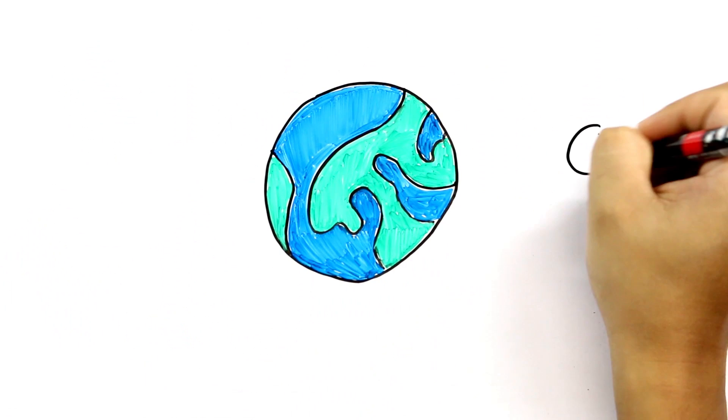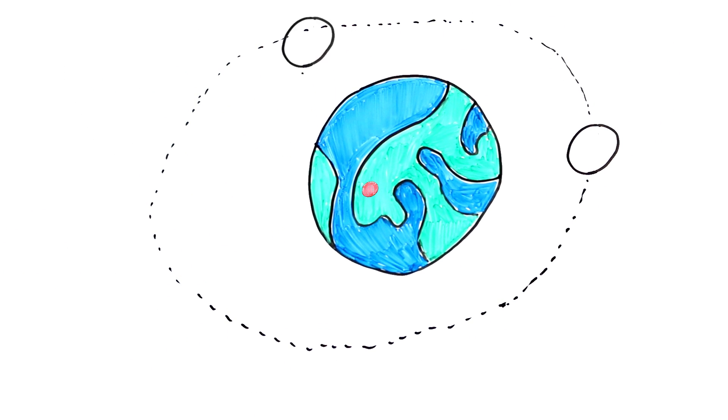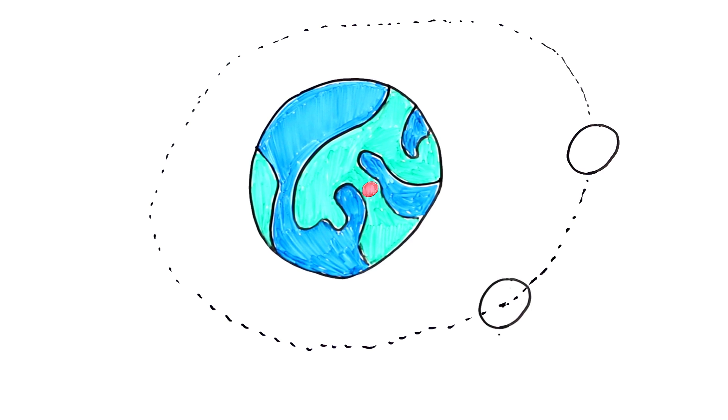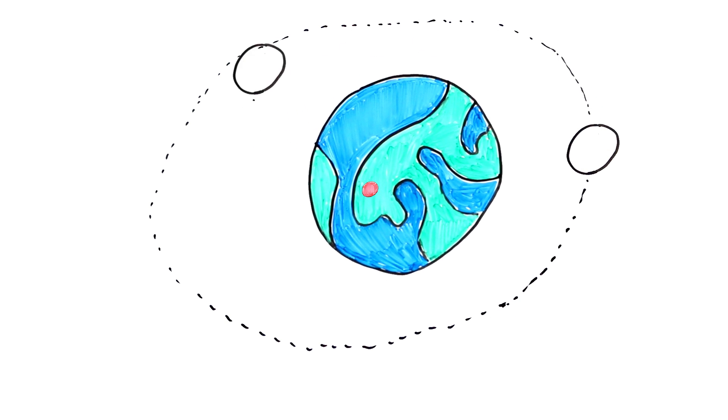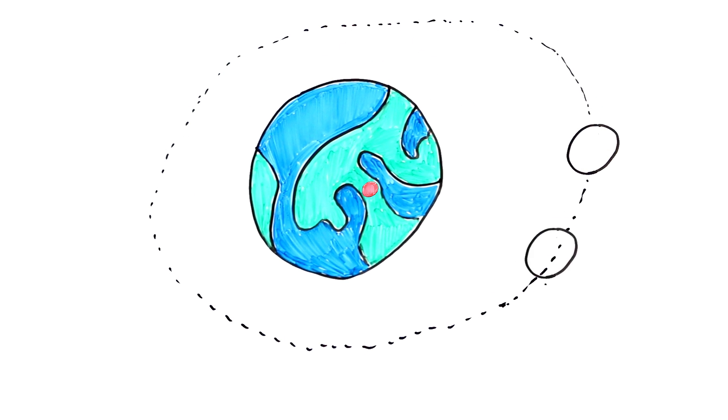When a small object orbits a big object in space, the less massive one doesn't really travel in a perfect circle around the larger one. Rather, both objects orbit a combined center of gravity.